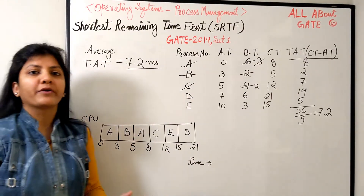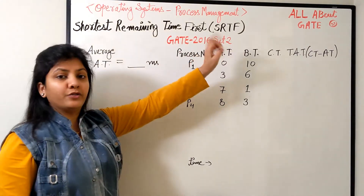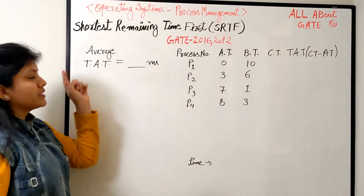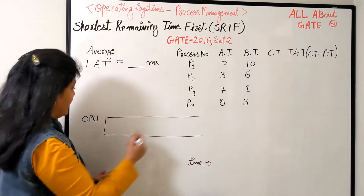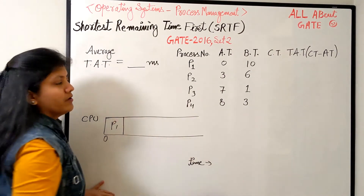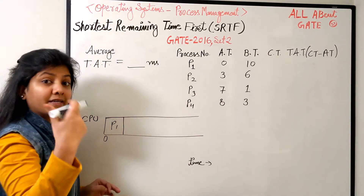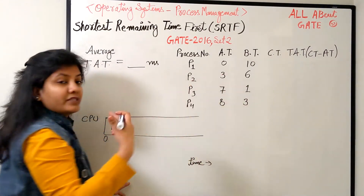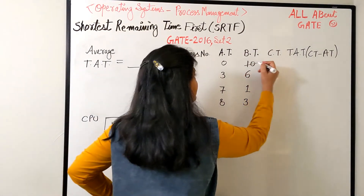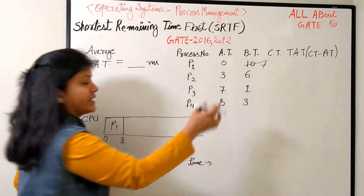Let's solve one more question from GATE 2016, Set 2. The question asks for the average turnaround time. At time zero we only have P1, so schedule P1. P1 runs until time three when P2 arrives. P1 has run three bursts, now needing seven. P2's requirement is six, which is less than seven, so let's schedule P2.